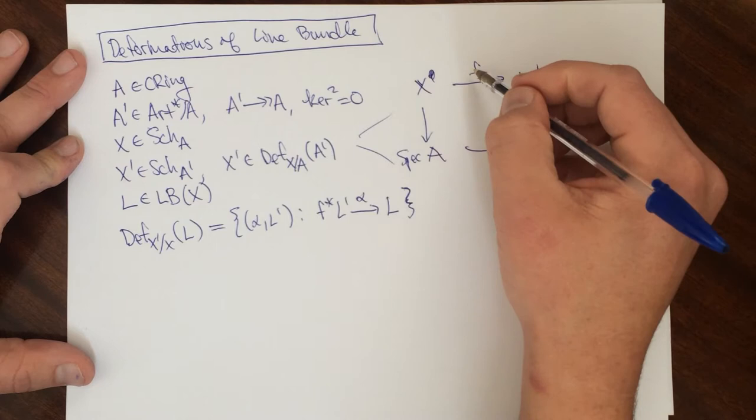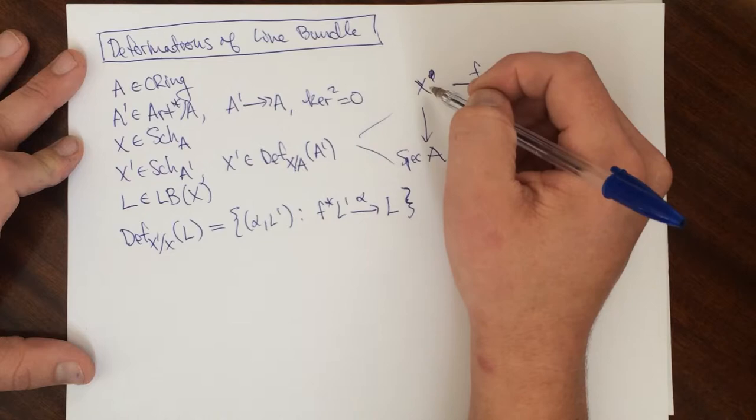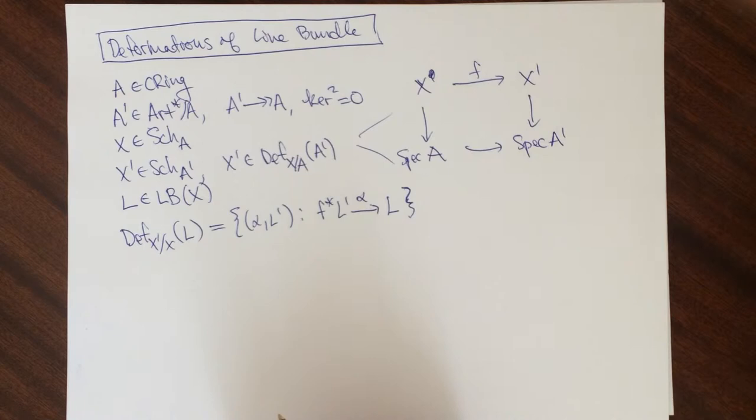So now given a line bundle here, we can pull it back to a line bundle here, and the alpha here says that those two things are isomorphic. That the pullback and L are isomorphic.